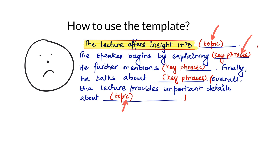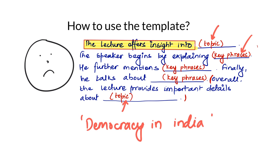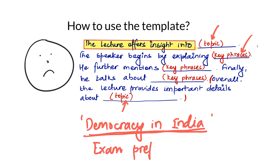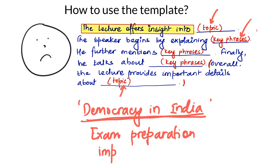From the sentence 'the democracy of India is in progress for the last hundred years', the key phrase would be 'democracy in India', because in this sentence this is the main point the speaker was emphasizing on. Similarly, from 'this textbook is really important for your exam preparation', you can write 'exam preparation' or you can also modify it a little and write 'important textbook', because the speaker talked about both those things.